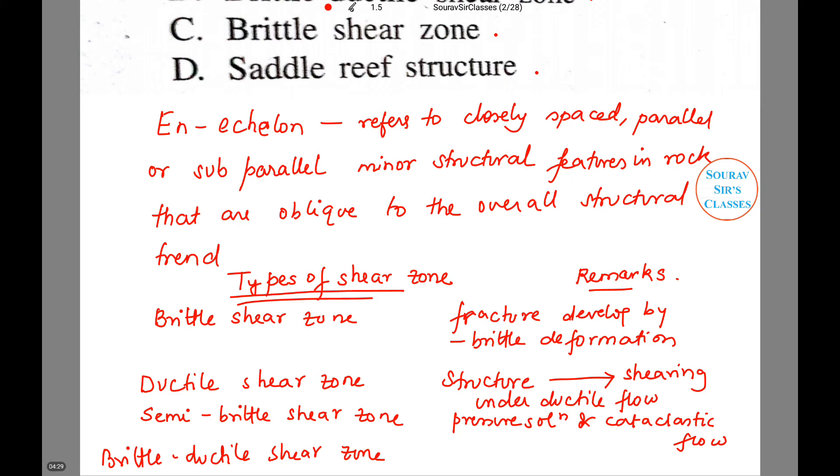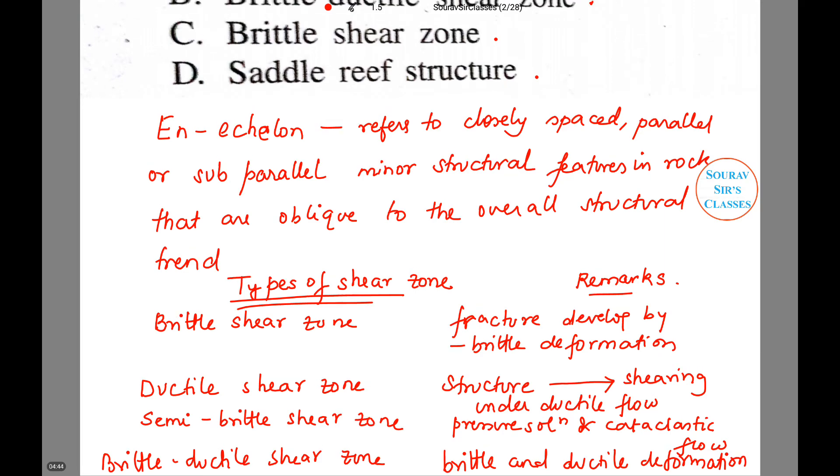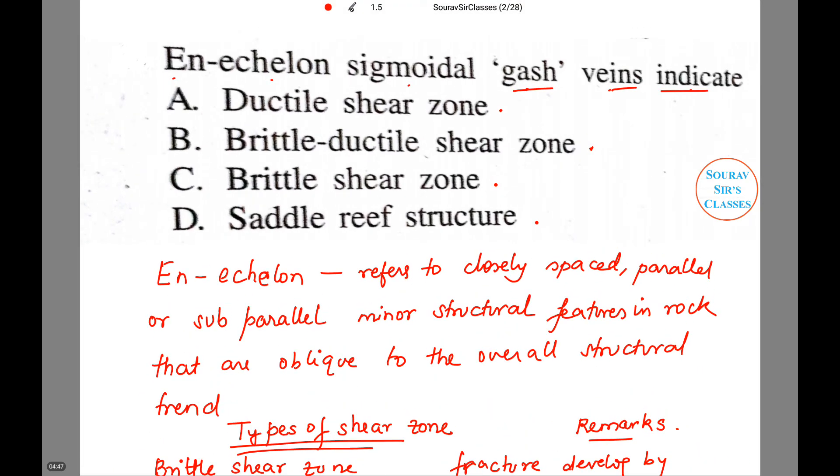And these are formed by brittle and ductile deformations. So the correct answer to this particular question or the right option will be brittle ductile shear zone. So based on the information that was given, the best option that can be picked indicating this particular situation is option number B.